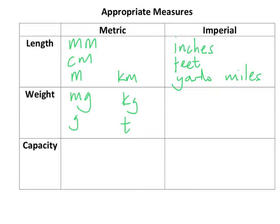For imperial weight we're looking at ounces, which are quite light, then pounds — sometimes written as 'lb' for reasons I keep meaning to find out — and stone. A lot of people measure their weight in stone and pounds, while the metric equivalent is kilograms.